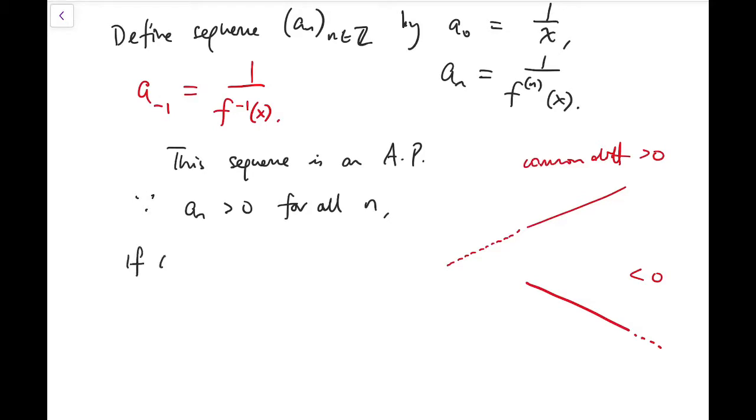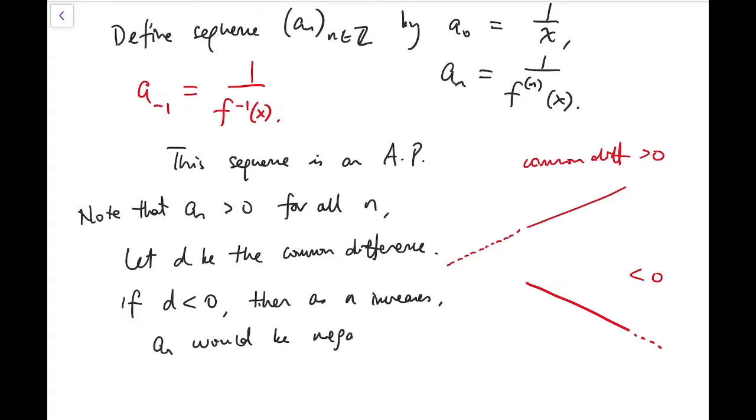So let's write this in our own words. It's very normal for us to keep fine-tuning our wordings while we're writing our proofs. If d is negative, then a_n would be negative for sufficiently large n. And if d is positive, a_n would be negative for sufficiently small n.